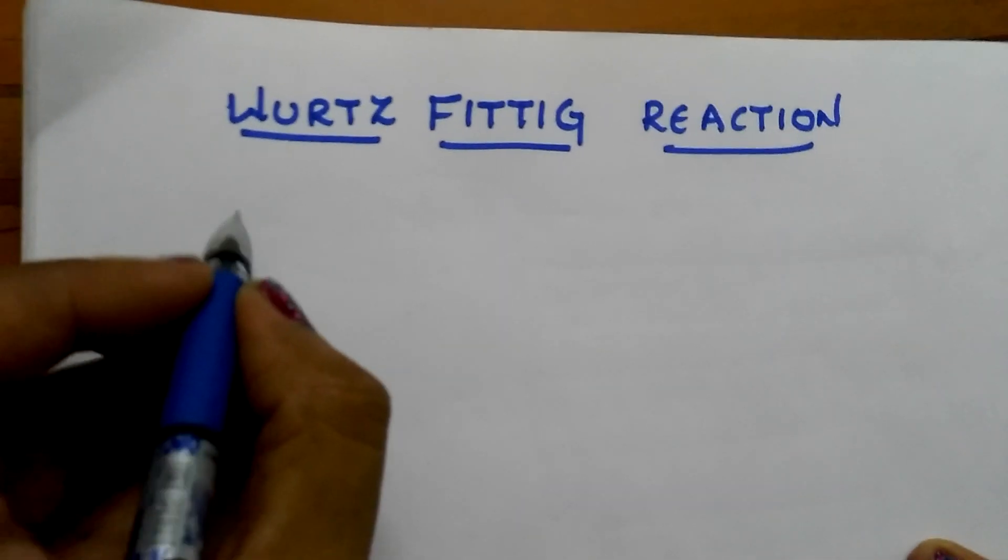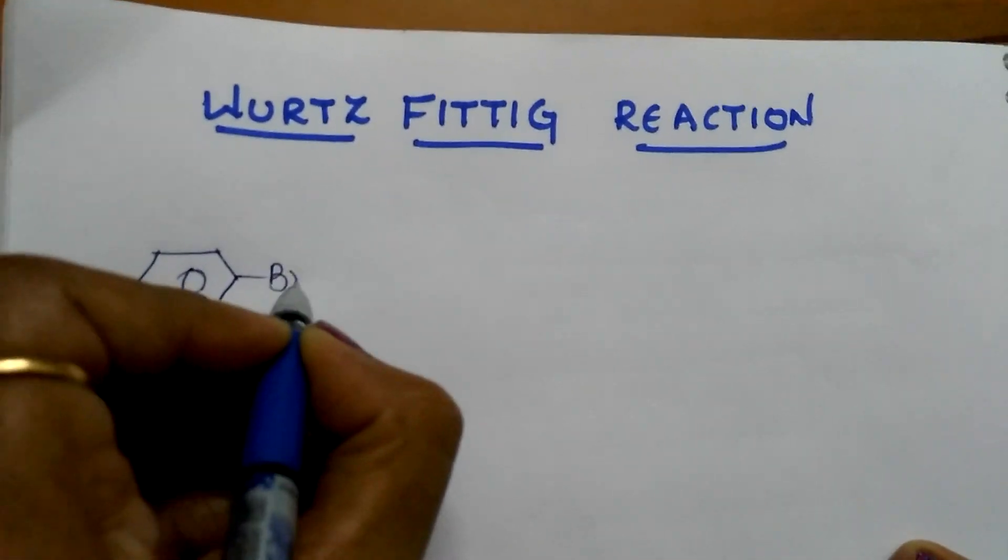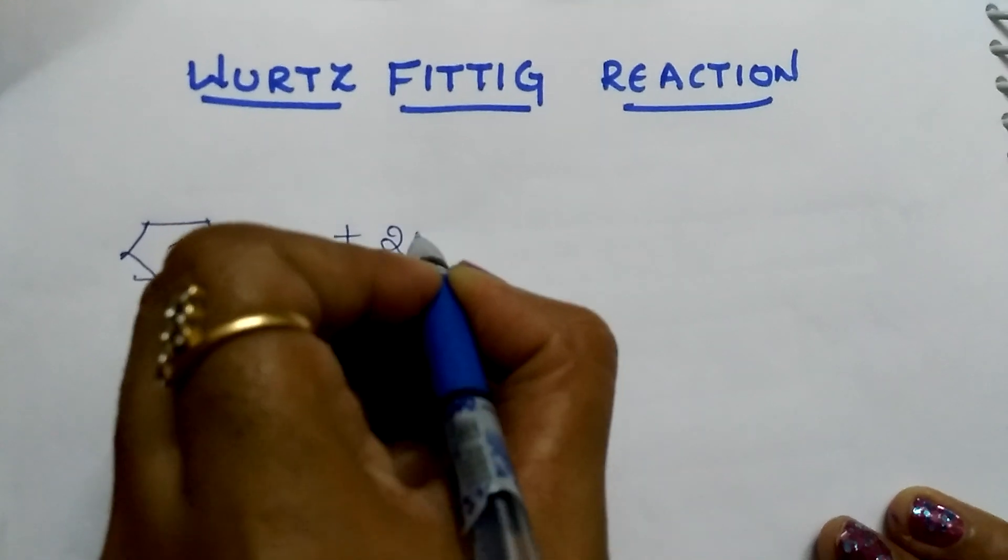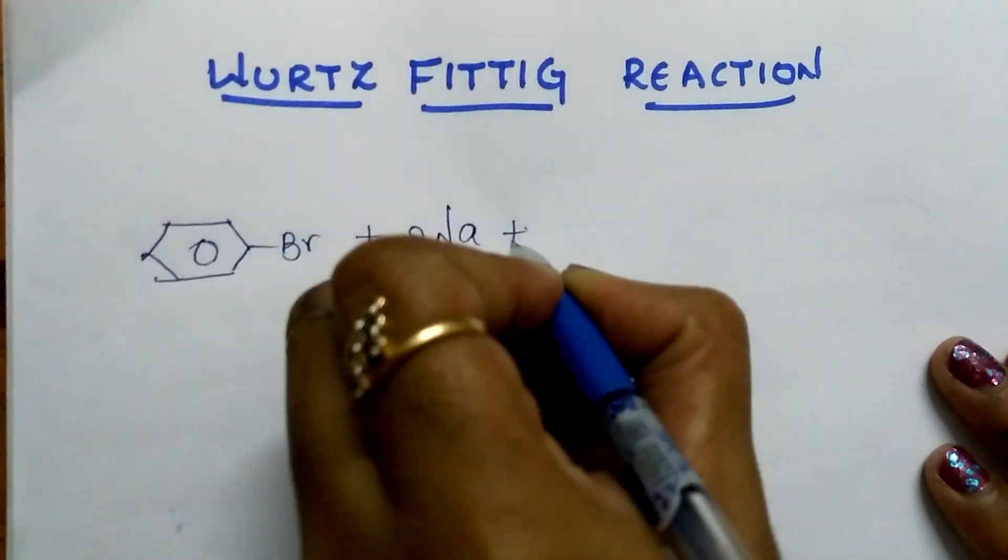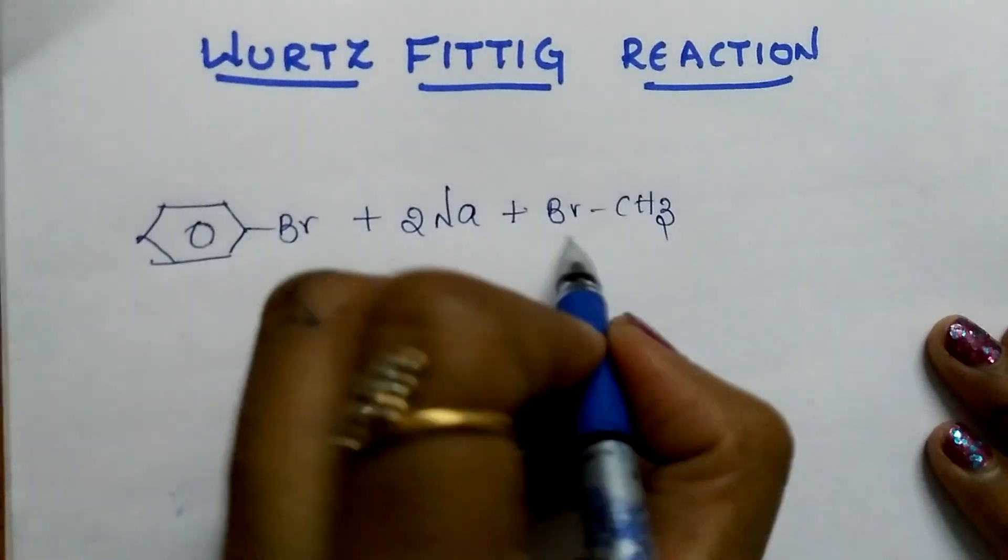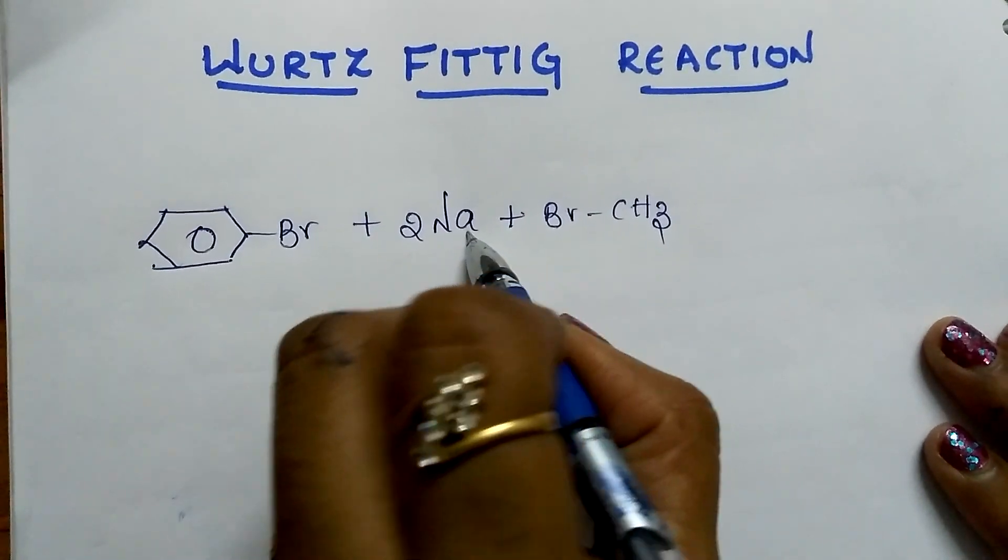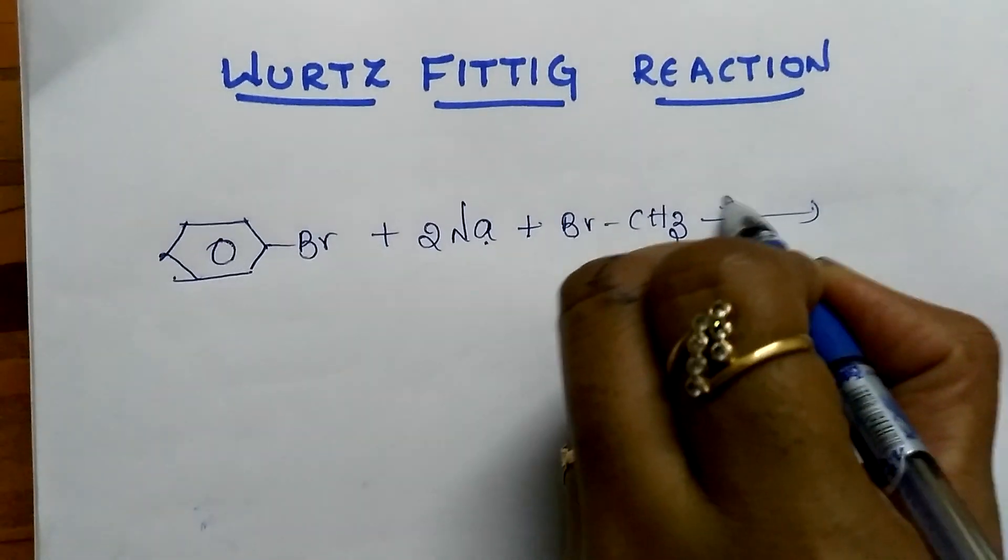Let us see an example. Meta-bromobenzene reacts with methyl bromide. Both react with metallic sodium in the presence of dry ether.